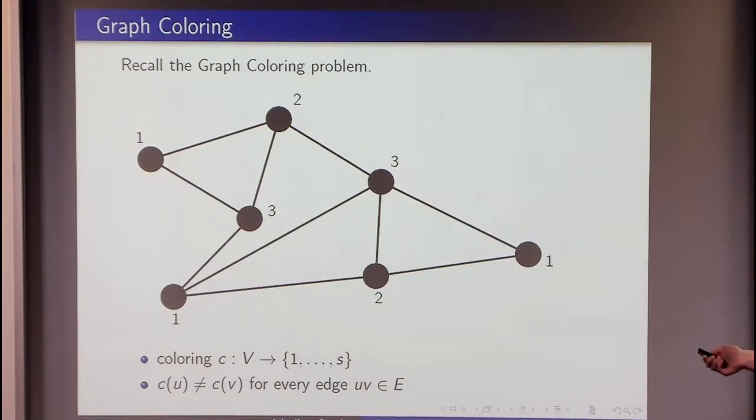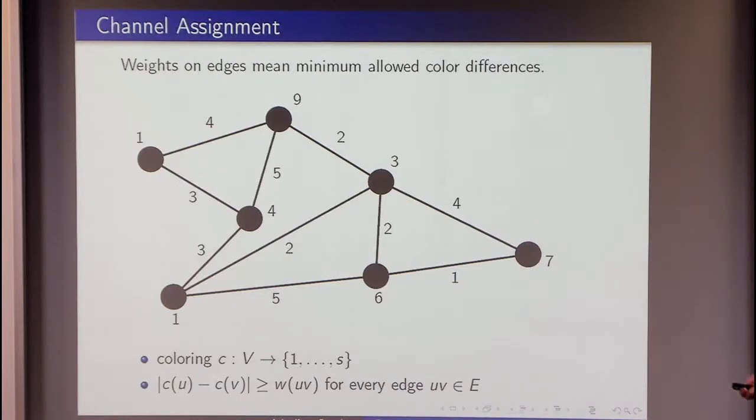We can understand this problem in such a way that on every edge we have a number one and this number one stands for the minimum allowed difference of the colors of the endpoints. Now we can generalize it. The generalized version is a channel assignment problem and we have, for example, if we have number five, then the difference of the colors of the endpoints needs to be at least five.